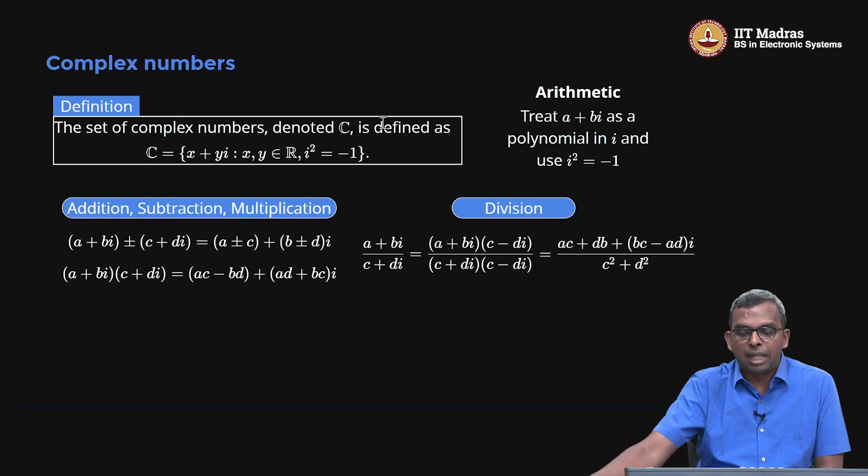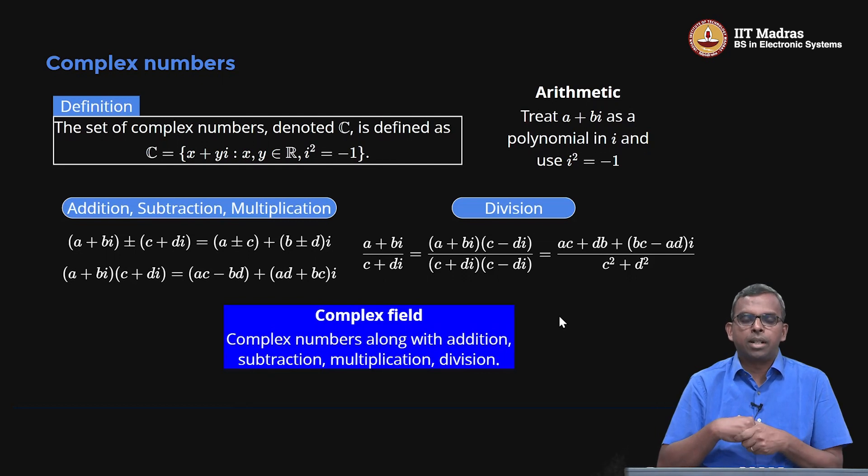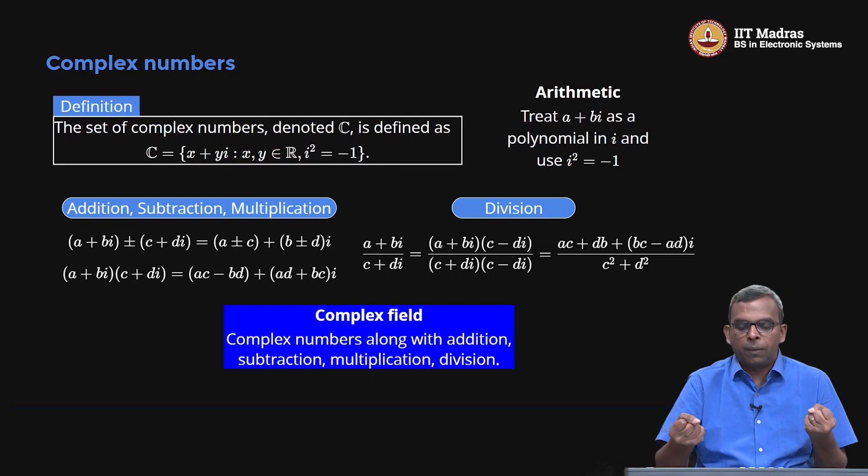Because you can do all that, complex numbers become a field. This field is also crucially important. There are aspects of this field you cannot do in real—something you cannot do in the real field, you can do in the complex field. This will be crucial, particularly when we look at eigenvalues and eigenvectors. You should have good familiarity with complex numbers and complex exponentials—that will show up quite a bit in eigenvalues and related problems.